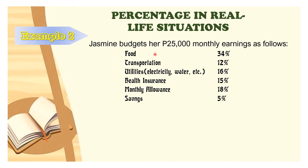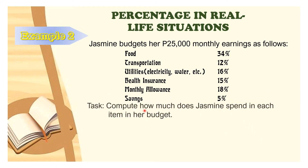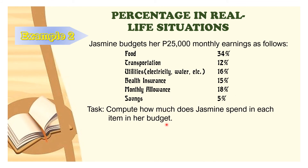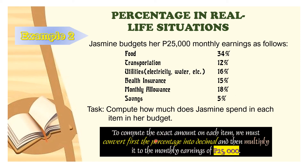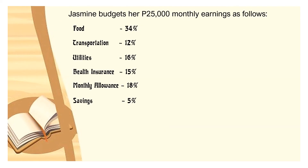Next problem: Jasmine budgets her 25,000 pesos monthly earnings as follows — 34% for food, 12% for transportation, 16% for utilities, 15% for health insurance, 18% for monthly allowance, and 5% for savings. Our task is to compute how much Jasmine spends on each item in her budget. Adding all the percentages gives 100%. To compute, we must first convert each percentage to decimal and then multiply by her monthly earnings of 25,000 pesos.